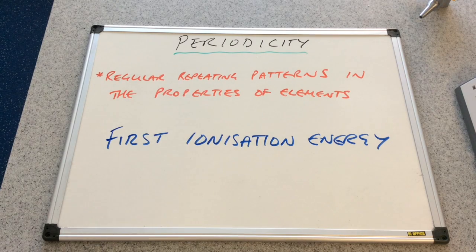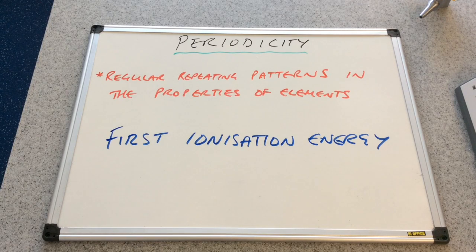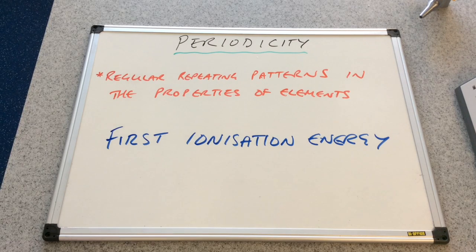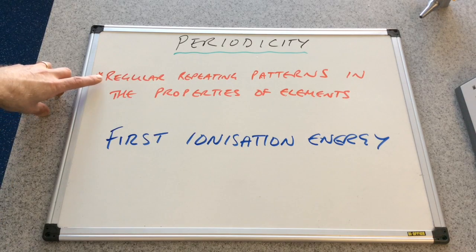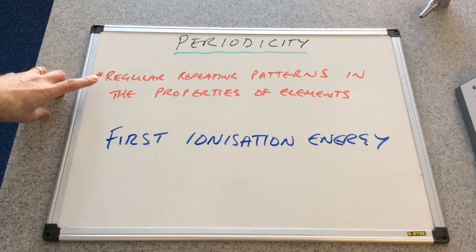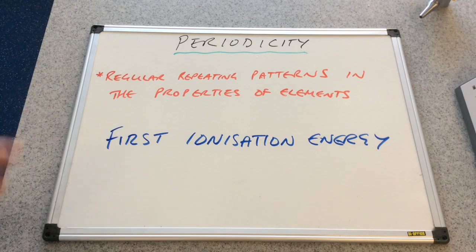In this video I'm looking at the periodic trends in the first ionisation energy. We're going to look at the trends in a group and we're going to look at the trends going across a period. Just a quick reminder of what we mean by periodicity or periodic trends: it's the regular repeating patterns in the properties of elements.